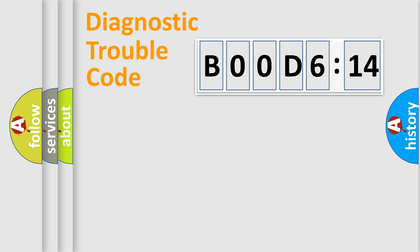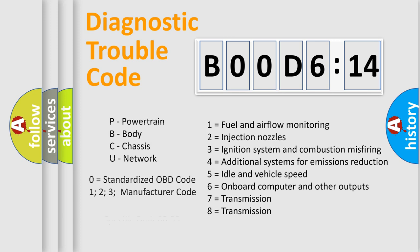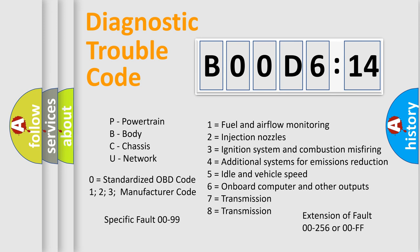The add-on to the error code serves to specify the status in more detail — for example, a short to ground. Note that such a division is valid only if the second character code is expressed by the number zero.